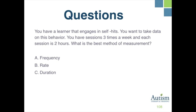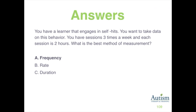You have a learner that engages in self-hits and you want to take data on this behavior. You have sessions three times a week and each session is two hours. What is the best method of measurement? A, frequency; B, rate; or C, duration? The correct response is A, frequency.